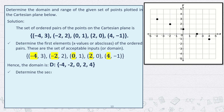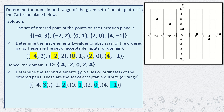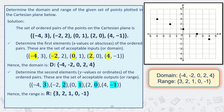Next, to determine the range, we identify the second elements — the y values or ordinates of the ordered pairs — which are the set of acceptable outputs. The y values of the given set of ordered pairs are 3, 2, 1, 0, and -1. Hence, the range is the set {3, 2, 1, 0, -1}. To summarize: the domain of the set of ordered pairs is {-4, -2, 0, 2, 4} and the range is {3, 2, 1, 0, -1}.